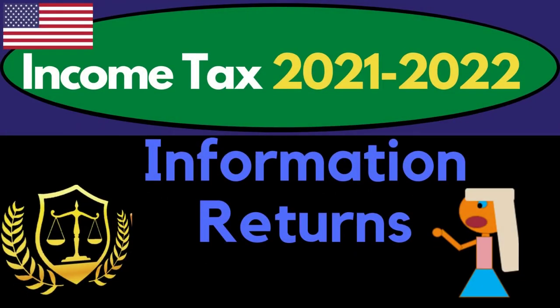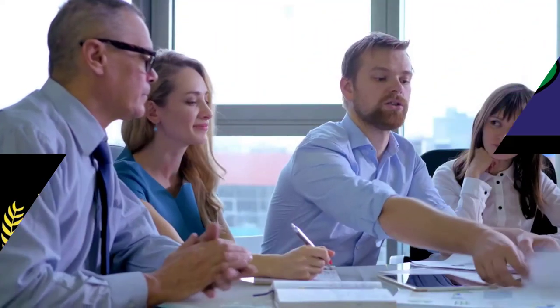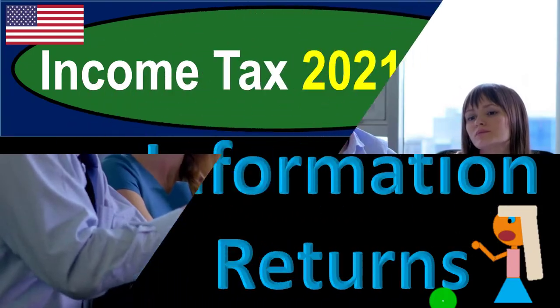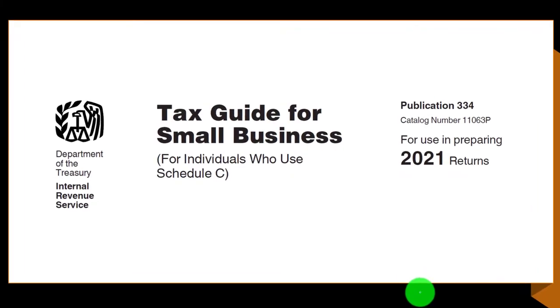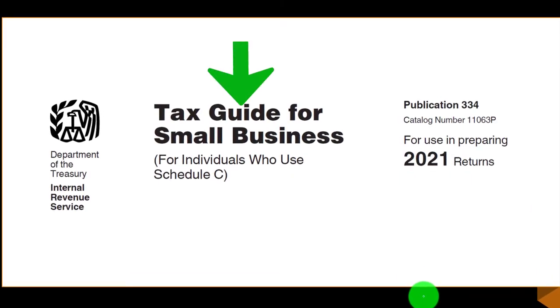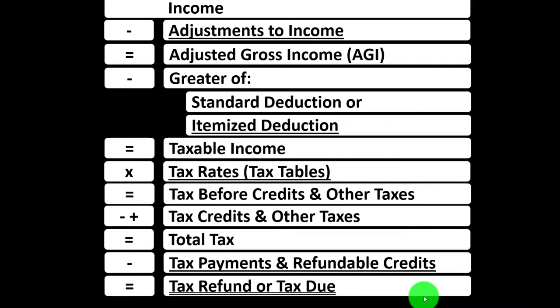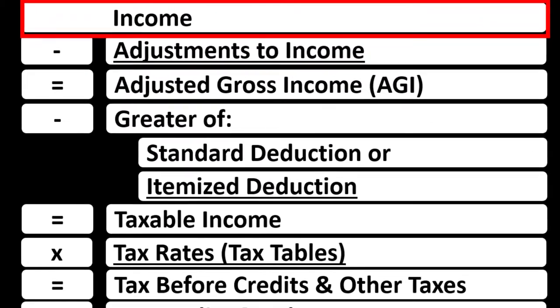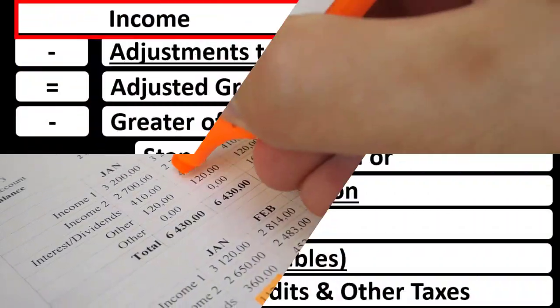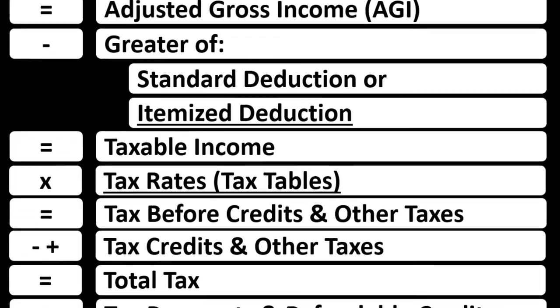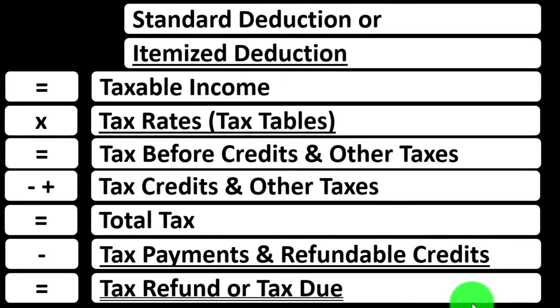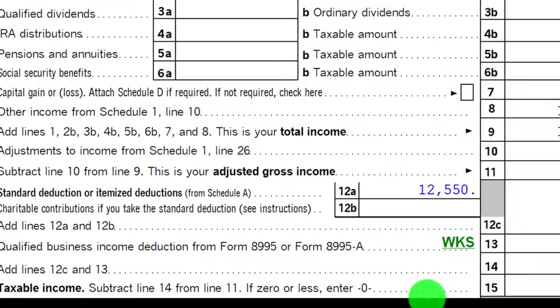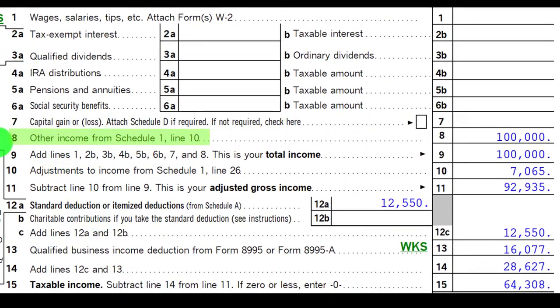Income tax 2021-2022 information returns. Get ready to get refunds to the max. Diving into income tax 2021-2022. Most of this information can be found in Publication 334, Tax Guide for Small Business 2021. We're looking at the top line of the income tax formula, but there will be a subschedule — in essence an income statement with income and expenses, expenses basically being deductions, the net then flowing into the top line of the formula, as well as the first page of Form 1040 on line number eight.